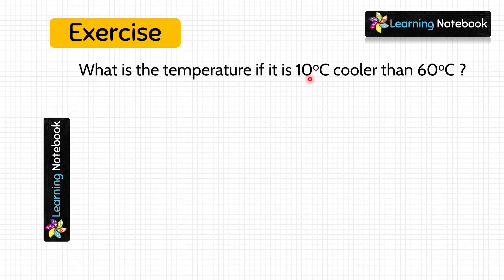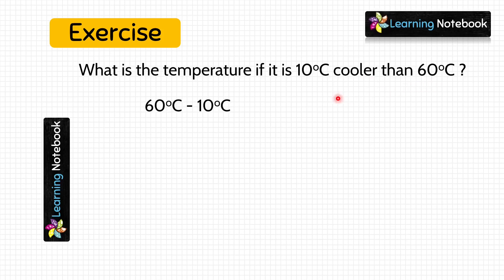Now let's do some questions. What is the temperature if it is 10 degree Celsius cooler than 60 degree Celsius? 'Cooler' means less temperature, so we will do 60 degree Celsius minus 10 degree Celsius. So 60 minus 10 equals 50 — the temperature is 50 degree Celsius.